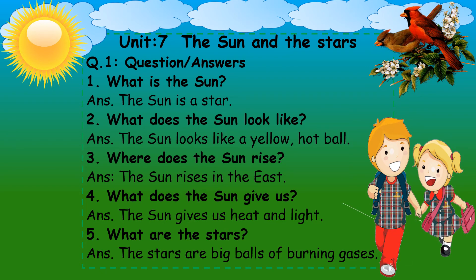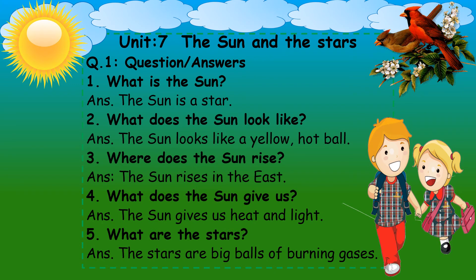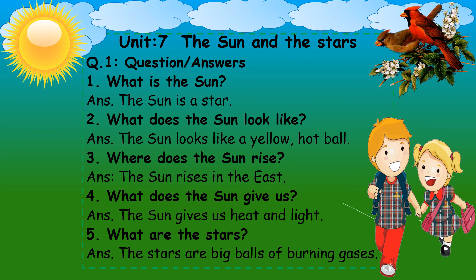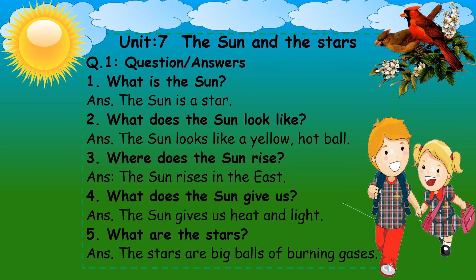Number 3: Where does the sun rise? Early in the morning at dawn, the sun appears from the east. So the sun rises in the east. The rotation of the earth causes day and night. The part of the earth where we are living, when it faces the sun, we start seeing the sun from the direction east. So the sun rises in the east.